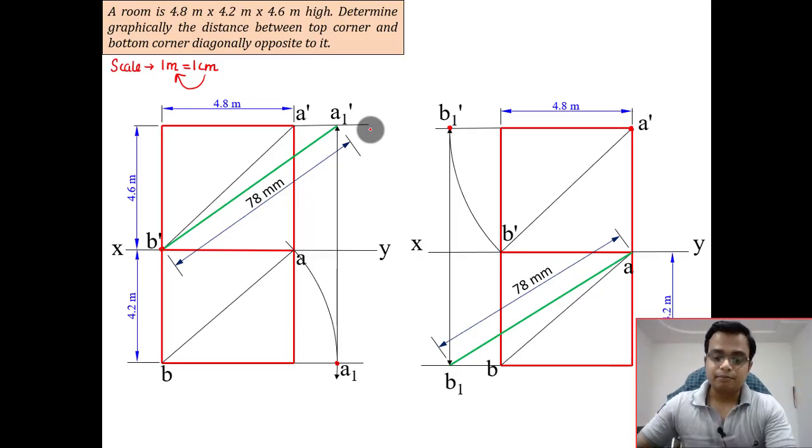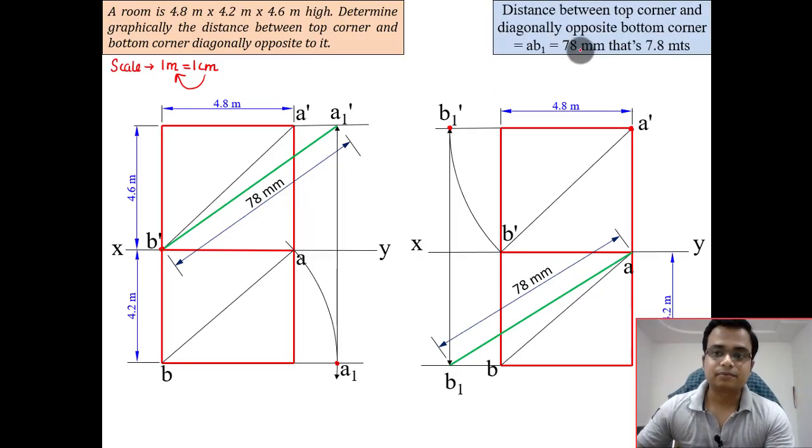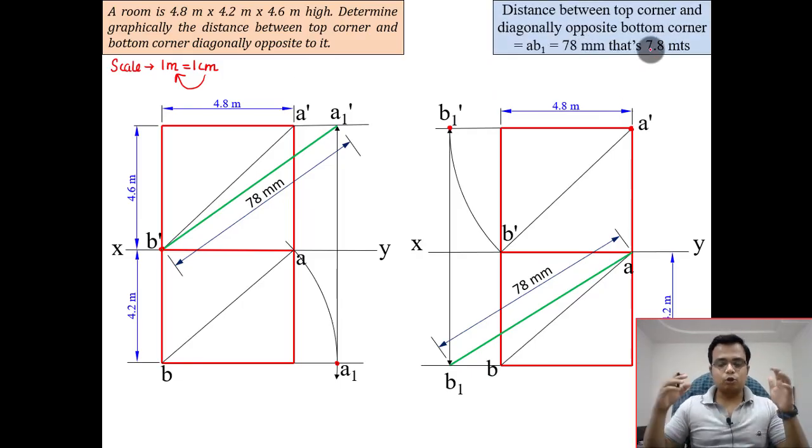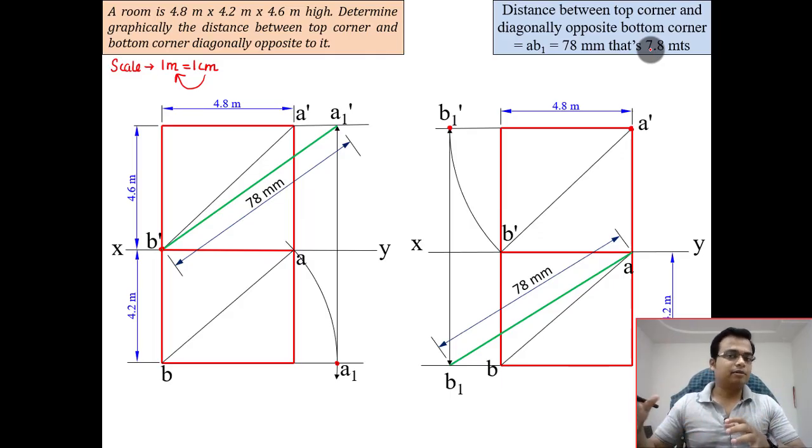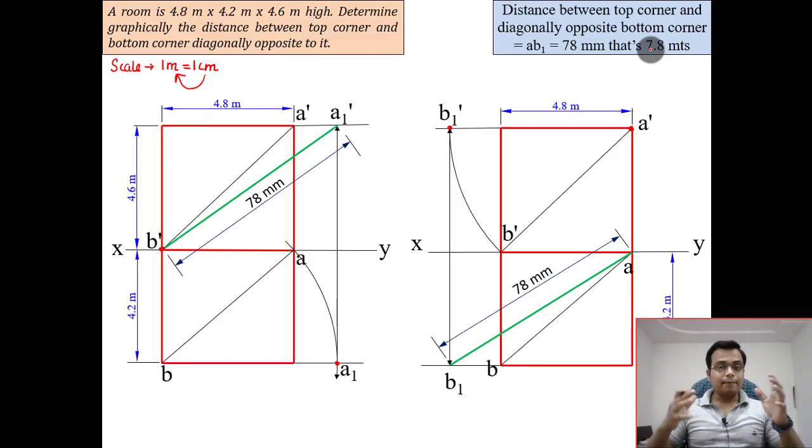The distance between the top corner and the diagonally opposite bottom corner is 7.8 meters. That was all for today. I'll see you in the next video. Thanks for watching.